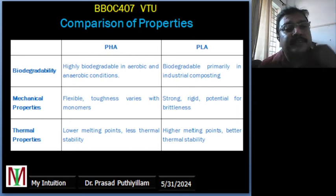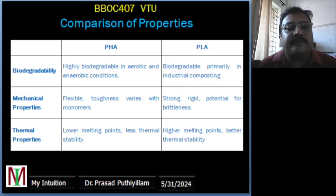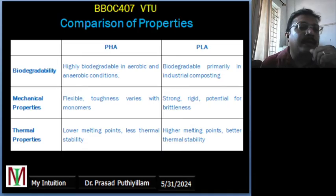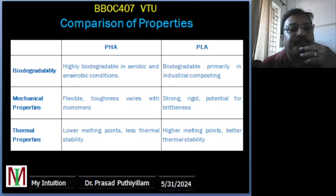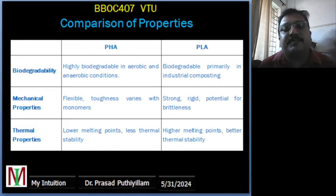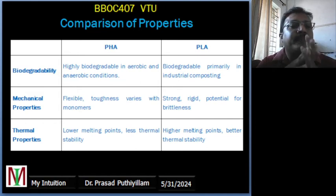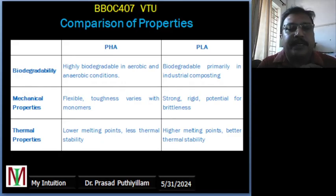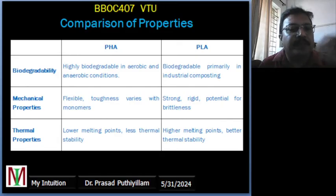Mechanical properties: PHA can vary significantly in mechanical properties depending on monomer composition. Generally, PHAs are flexible and can range in toughness and tensile strength. For example, PHBV is known for its flexibility and is used in medical sutures — stitching threads are made from PHBV. On the other hand, PLA is a very strong and rigid material similar to conventional plastics like PET, but it can also be brittle. PLA is commonly used to make disposable cups.